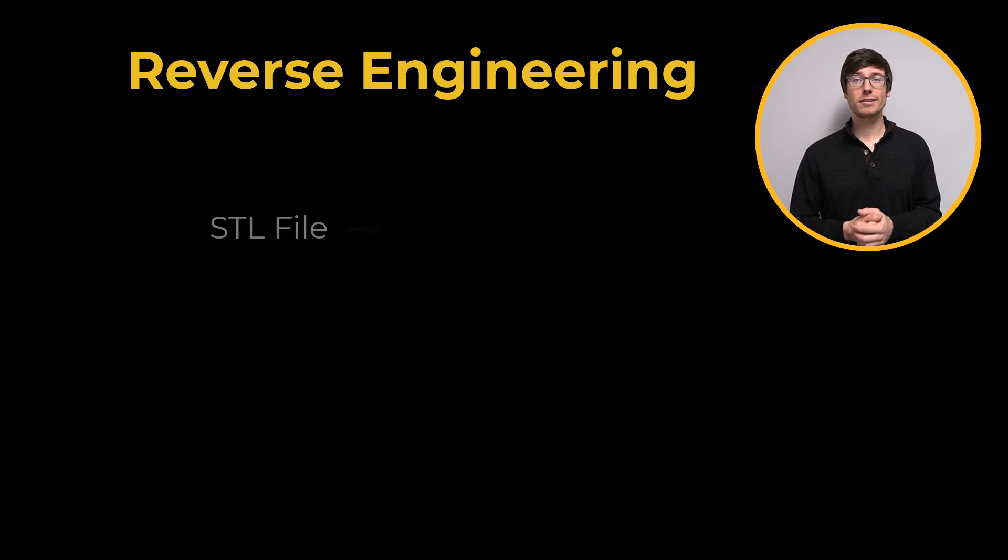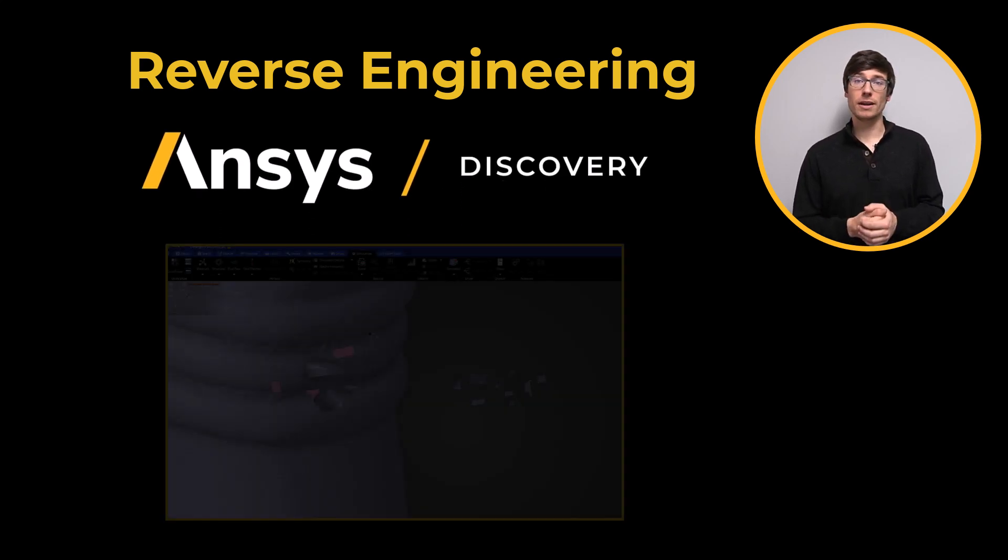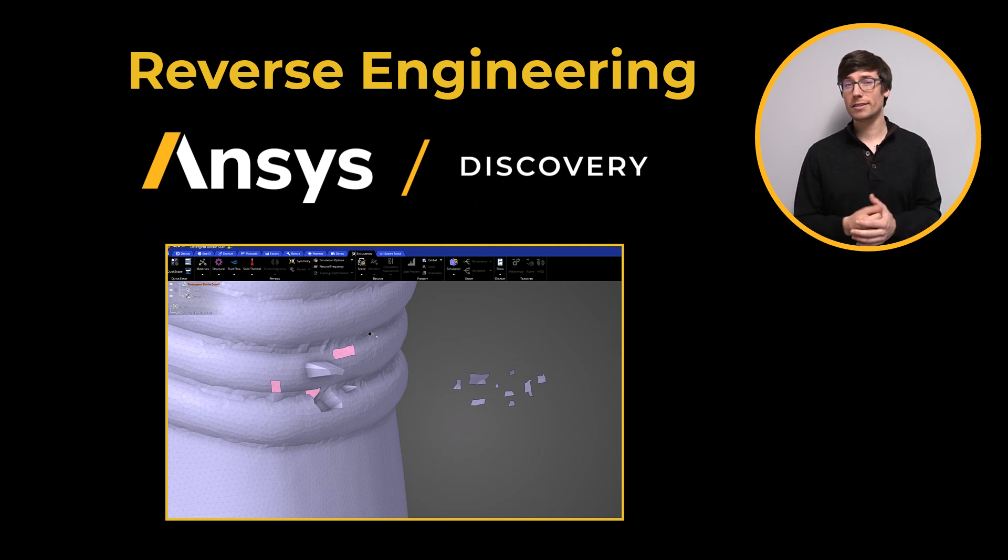To transform the STL file into a watertight 3D model, engineers can use CAD software like ANSYS Discovery. Bad scan data is common in the engineering world, so it's best to have access to tools that can accommodate incomplete information in the STL file.